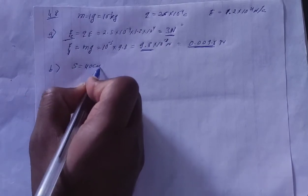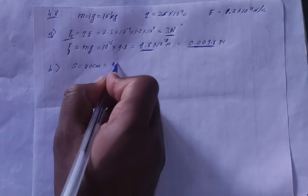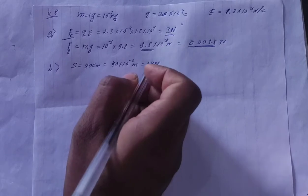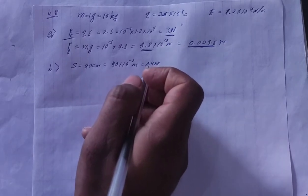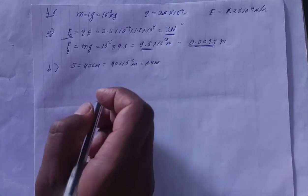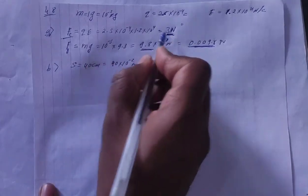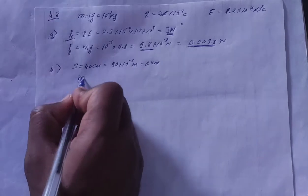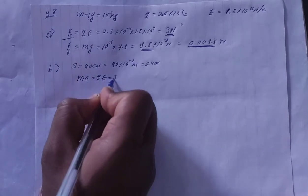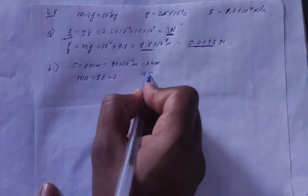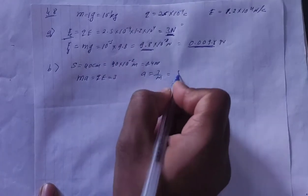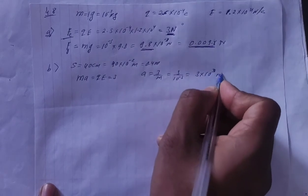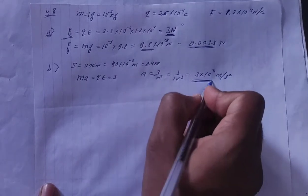It asks can we neglect one? That is 40 cm, which is 40 into 10 to the power minus 2 meter, that is 0.4 meter. So how much time does it take to travel 0.4 meter? First, we have force of 3 newton and mass of 1 gram. So what is the acceleration? We can find that. So MA is equal to QE, that is 3 newton.